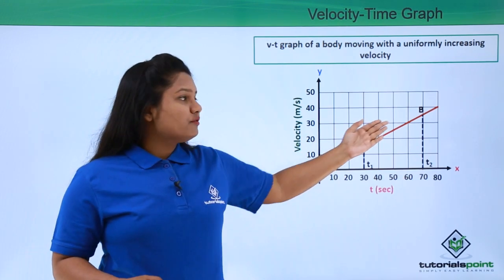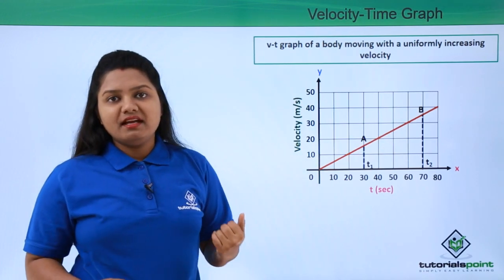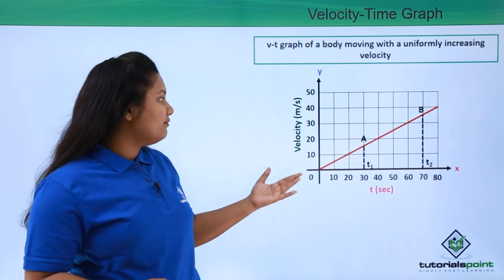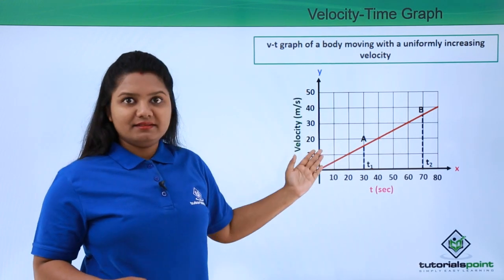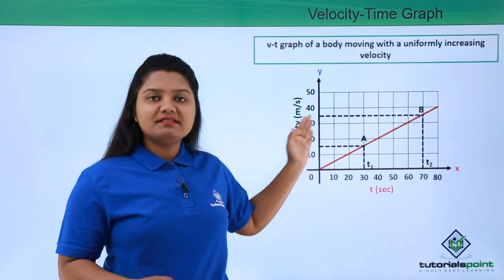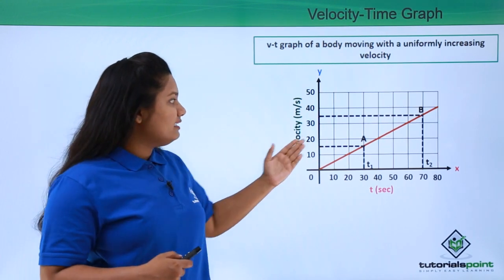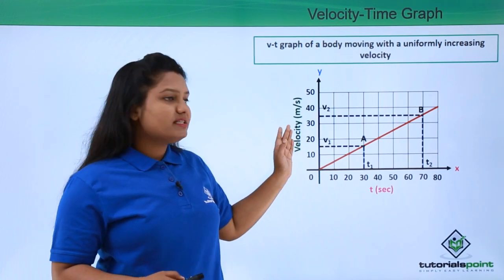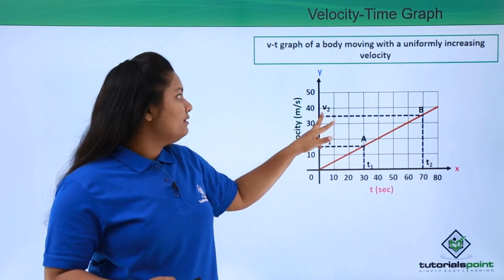Now we also have to find the velocity values at points A and B. To do that we follow a similar procedure, but this time we draw perpendiculars from these two points to the y-axis. The points where these two perpendicular lines touch the y-axis give us the values of the velocities at these two points. Let us say the velocity at point A is v1 and at point B is v2.